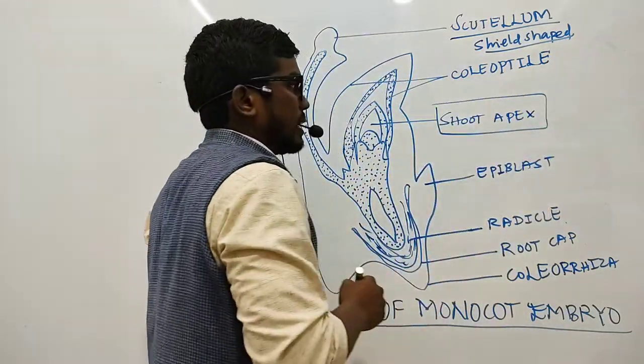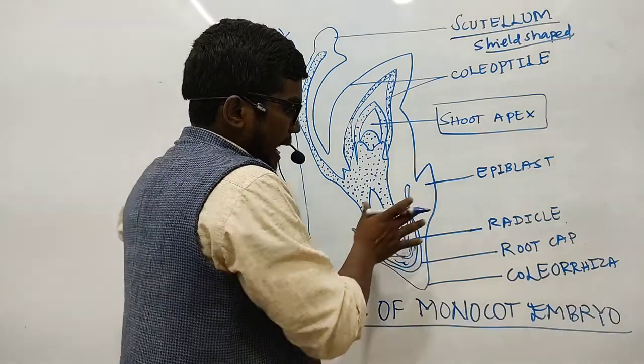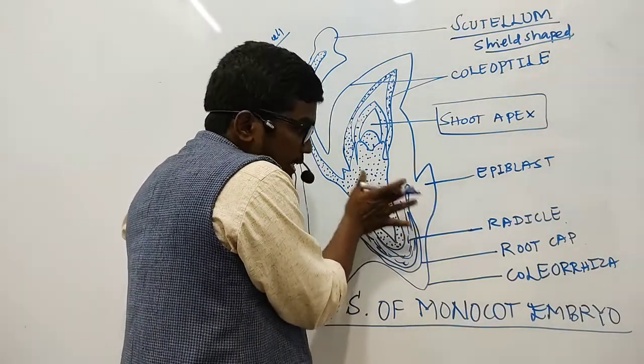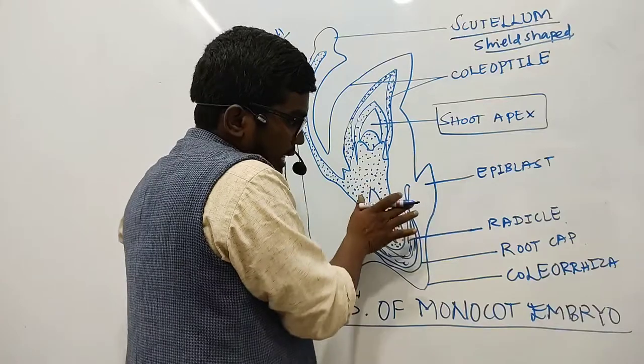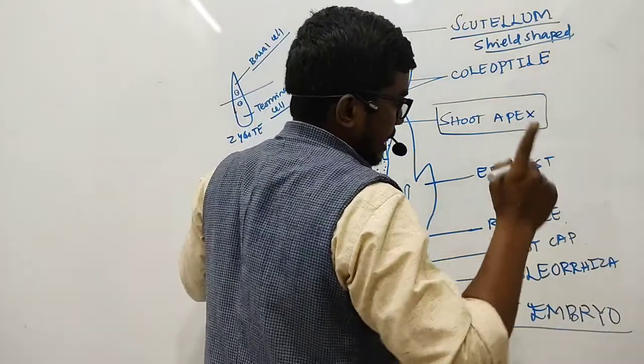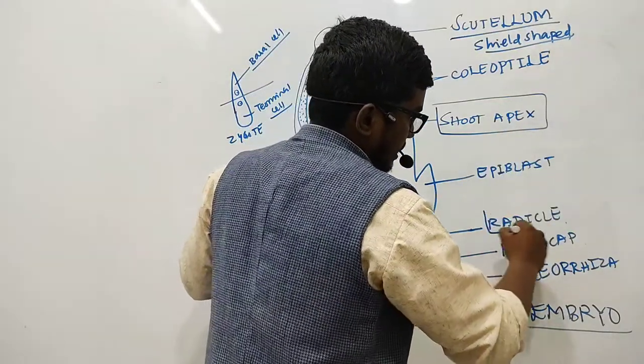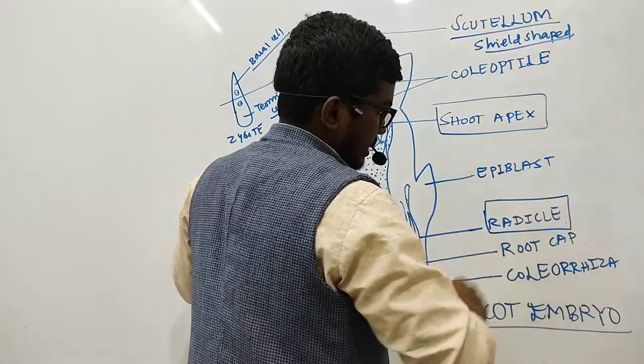The embryonal axis below the level of cotyledon we call that as the hypocotyl. So in the hypocotyl region, the important region we have here is radicle.